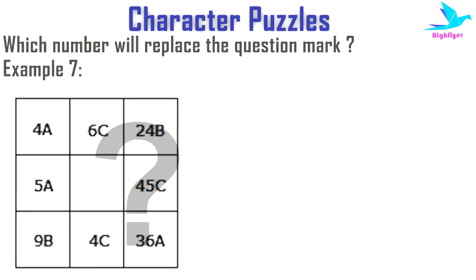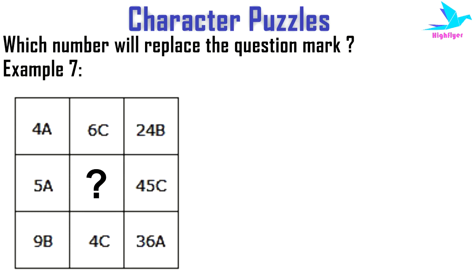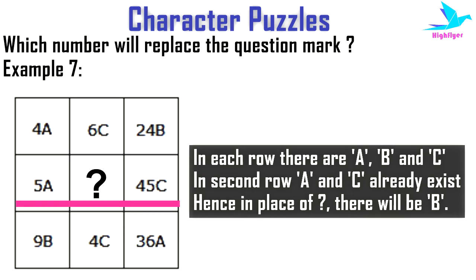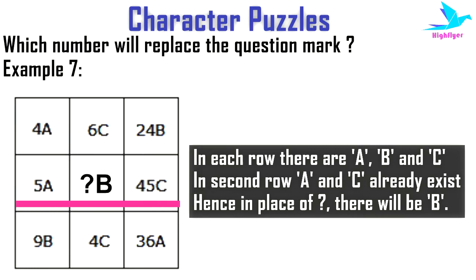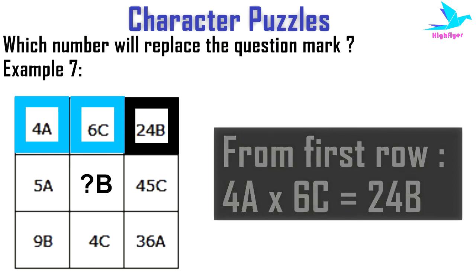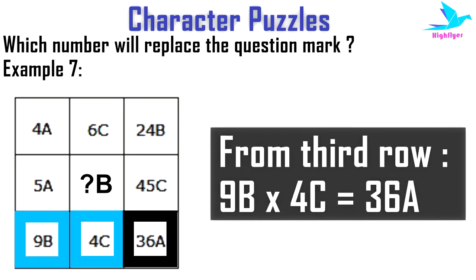In the next example, we see alphanumerical numbers inside boxes in columns and rows. Looking at each row, we see terms with alphanumerical digits a, b, and c. In the second row we can see alphanumerical numbers with a and c, so the question mark will be alphanumerical b. In the first row, 4a × 6c gives 24b — the product of the first two numbers gives the third.